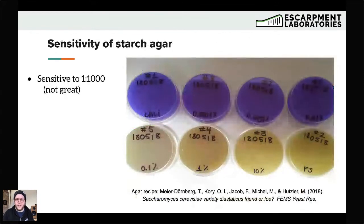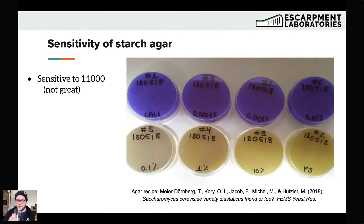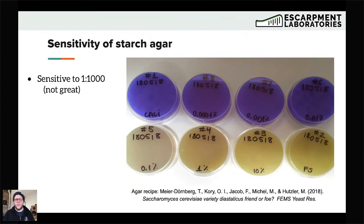This starch degradation plate method is also not necessarily the most sensitive. We did test it using the French Saison strain — taking some Cali ale and infecting it with different quantities of French Saison yeast, which is a very strongly diastatic strain. We found it was only sensitive down to about one in a thousand, so it's a pretty low sensitivity. It's not great for active detection or quality control of diastatic yeast, but it is a good tool to characterize a strain and understand how much starch degradation potential that strain has.